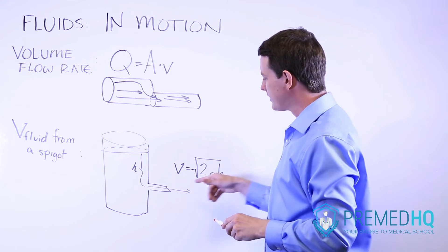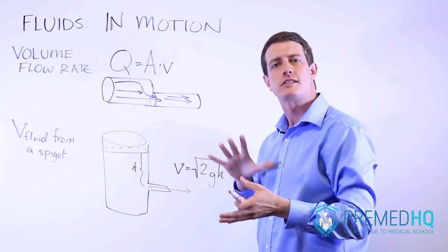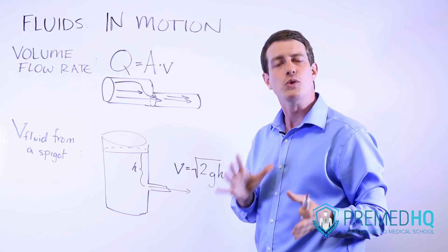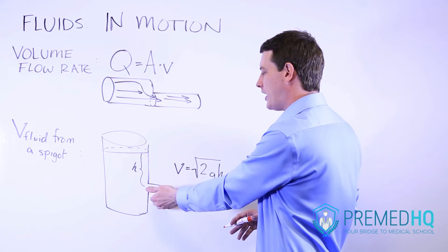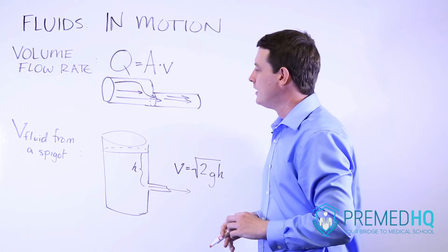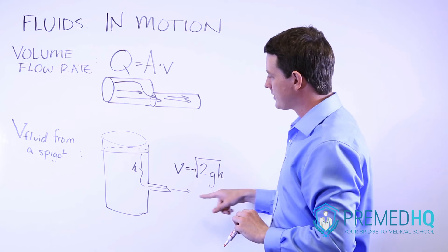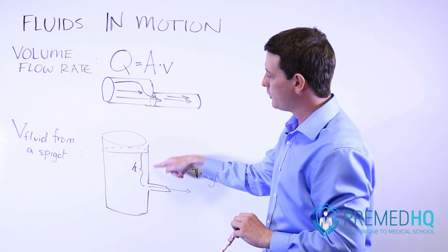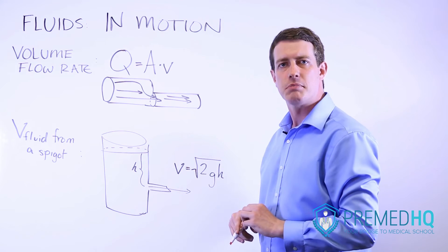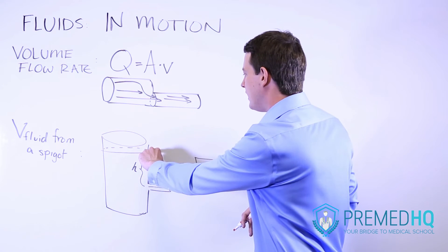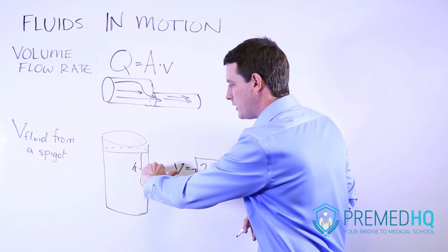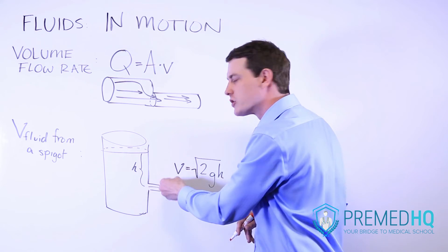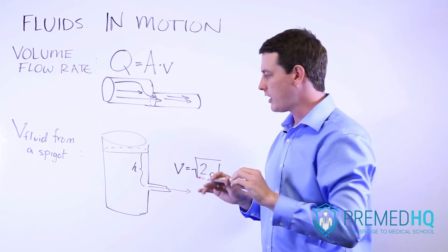And it turns out that this is the exact same formula, but expressed using a proof of Bernoulli's principle that allows it to apply for this spigot as well. So the H in this case is the height of the fluid above the level of that spigot, and what that means is that as the height of this fluid gets lower and lower and closer to the spigot, the fluid will travel more slowly.